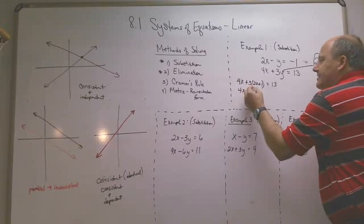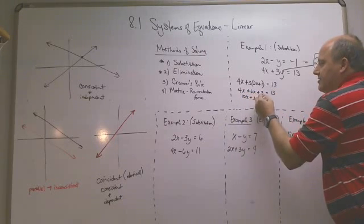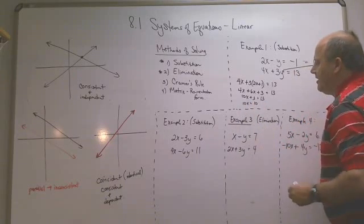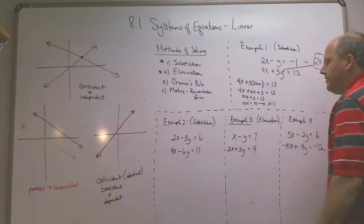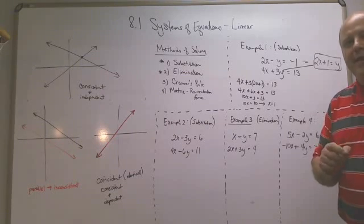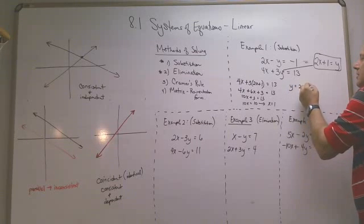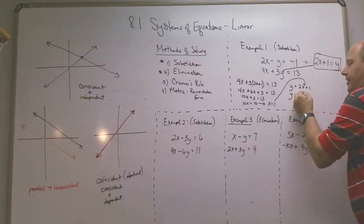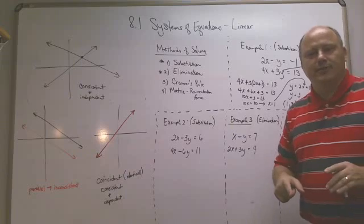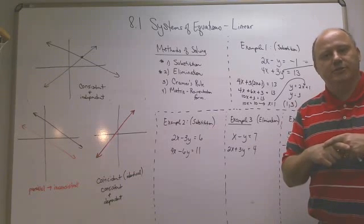Multiplying through: 4x plus 3 times (2x plus 1) gives 4x plus 6x plus 3 equals 13, so 10x equals 10, and x equals 1. That's just the x value of the ordered pair. To find y, plug 1 back into y equals 2x plus 1: y equals 2 times 1 plus 1, which is 3. So the answer is the ordered pair (1, 3) — the intersection point.